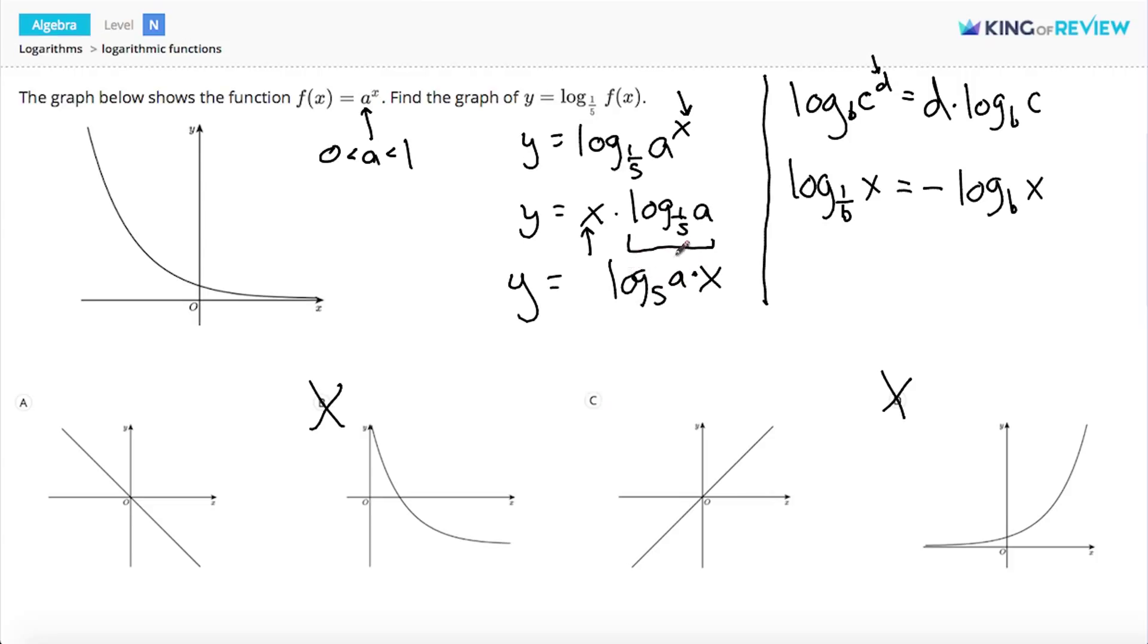And to be able to change 1 fifth into 5, I need to make the log a negative. So, now we know that the slope of the line is negative log base 5 of a.